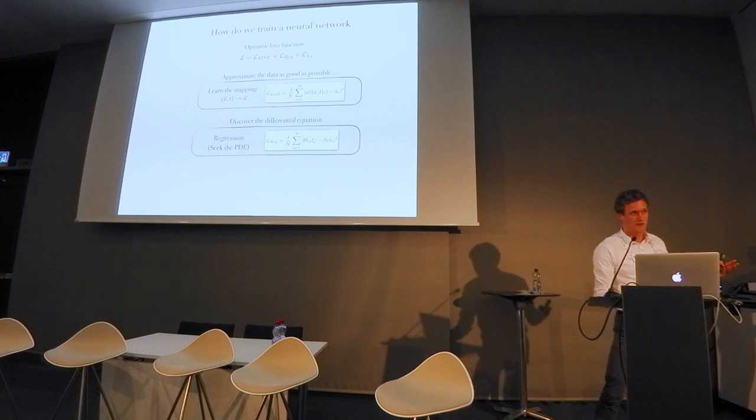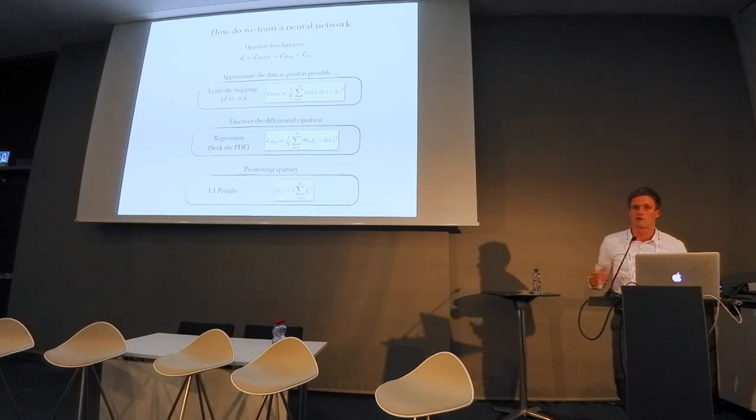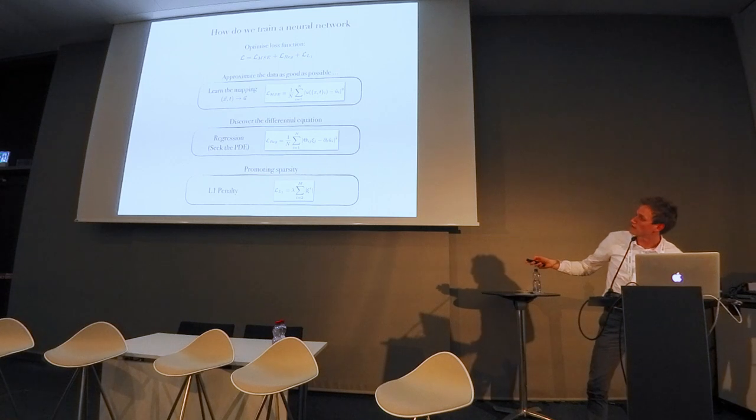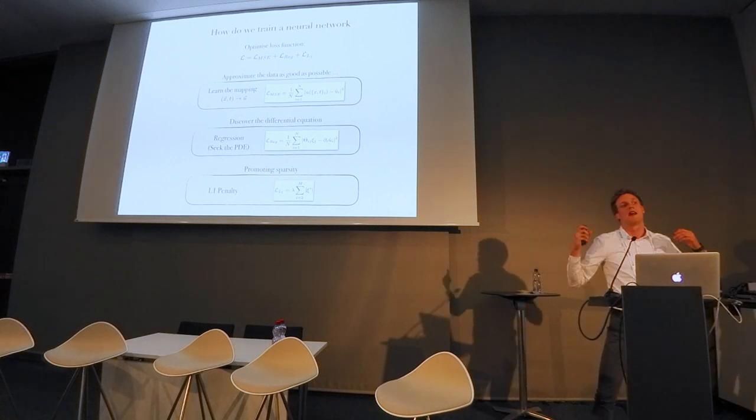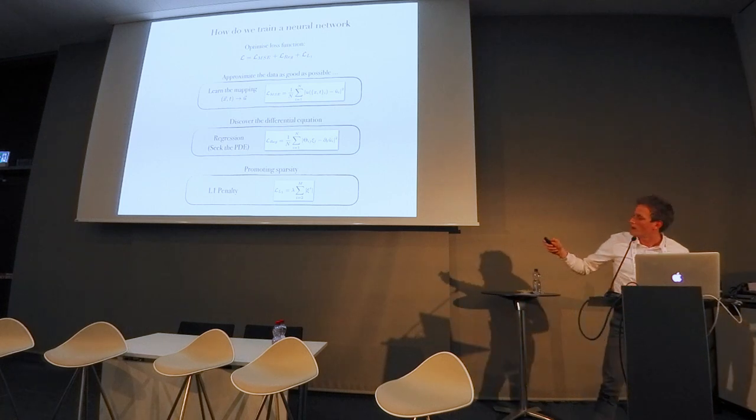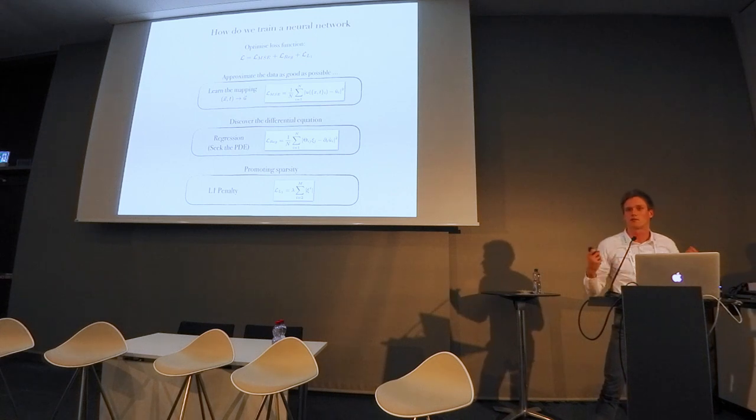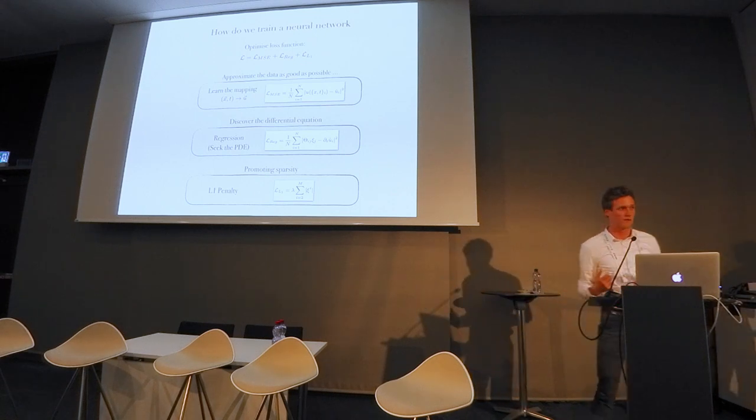We also have a third term in our loss function, which is an L1 penalty on this vector xi. This is to promote sparsity. It turns out, at least surprisingly for me, that for everything I'll be discussing, we don't really need this L1 penalty, but it helps to converge faster, so it speeds up convergence.